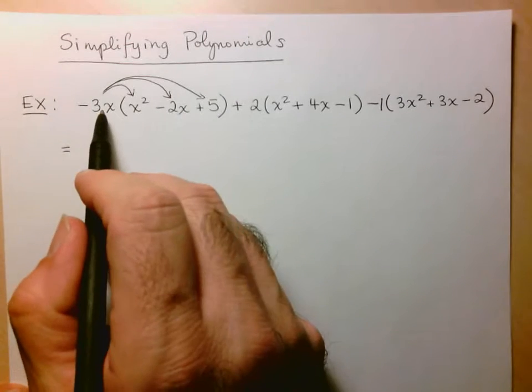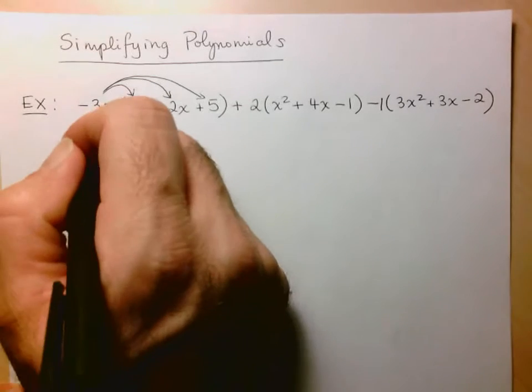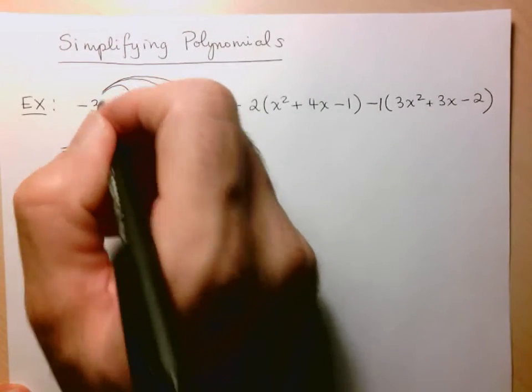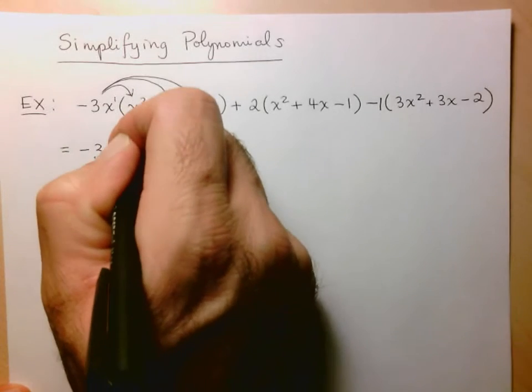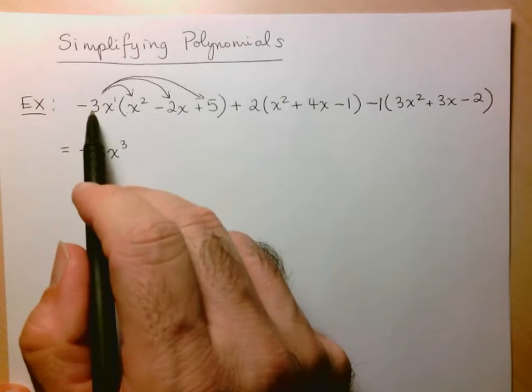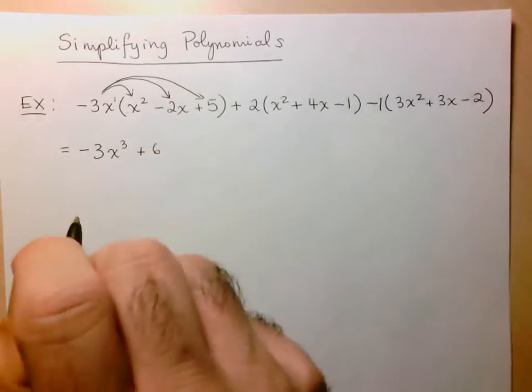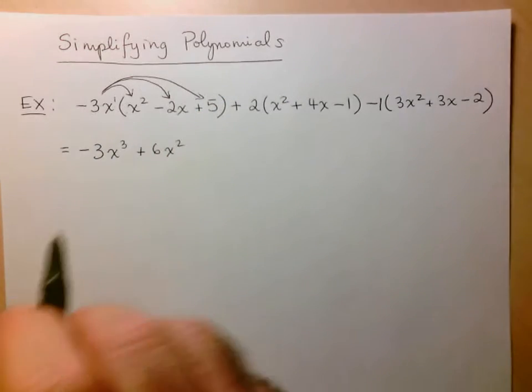So first I have negative 3 times x squared. So coefficient here is 1, so negative 3 times 1, still negative 3. And then x to the 1 times x squared, we add the exponents, x cubed. Let's go to the next one. Negative 3 times negative 2 gives us positive 6. x times x, x squared.